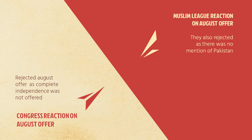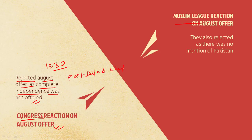The reaction of different sections to the August offer: Congress rejected it because complete independence was not offered — since 1930 they had been demanding complete independence. They called it a post-dated cheque — offering something that was no longer demanded, since the INC's only demand was complete independence. Similarly, Muslim League also rejected the August offer because after the Pakistan Resolution of 1940 their only aim was to get a separate country for Muslims, and since that was not offered they also rejected it.